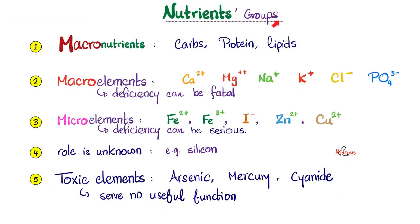We divide nutrients into five groups. Those macronutrients, macro-elements, or macro-minerals, including calcium, magnesium, sodium, potassium, chloride, and phosphate, whose deficiency can be fatal.